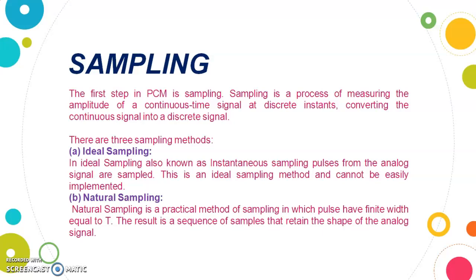The second method is natural sampling. Natural sampling is a practical method of sampling in which pulses have finite width equal to T. The result is a sequence of samples that retain the shape of the analog signal.